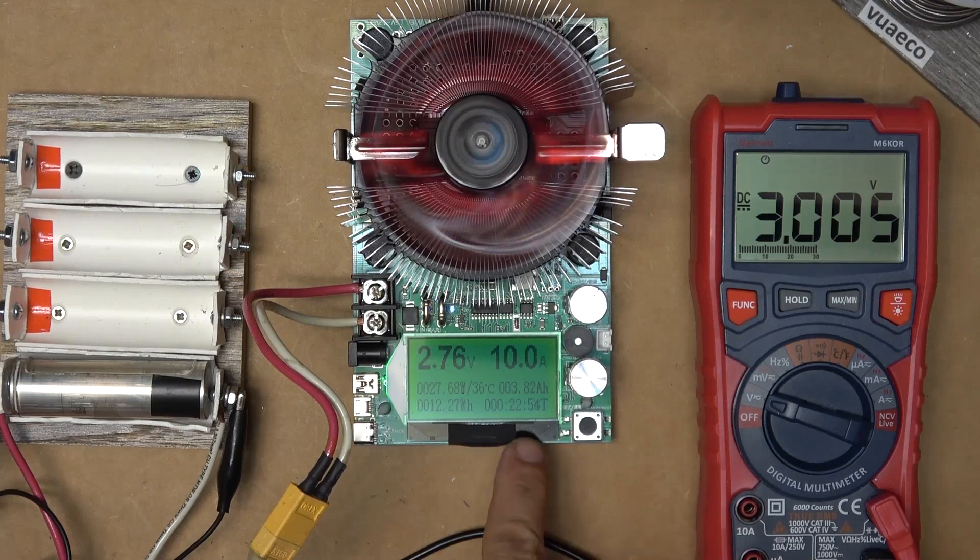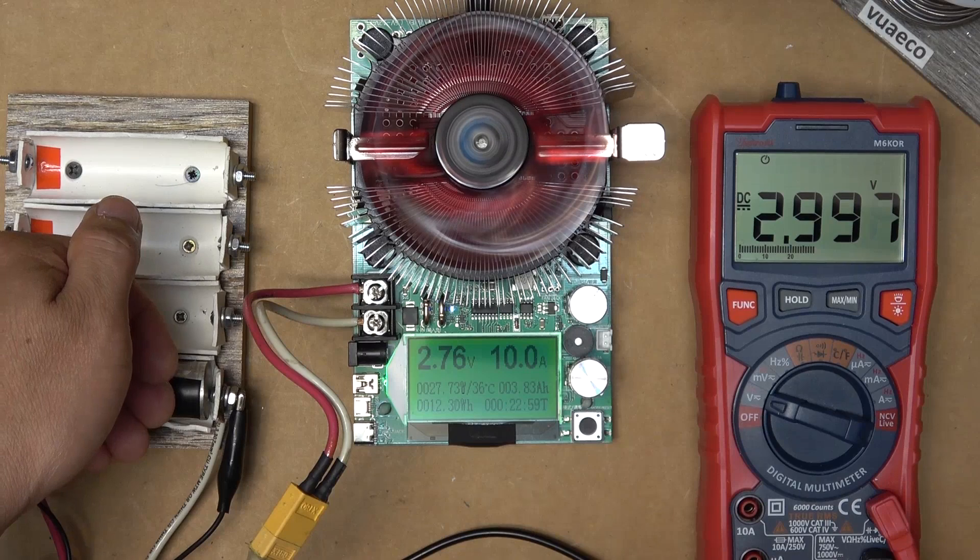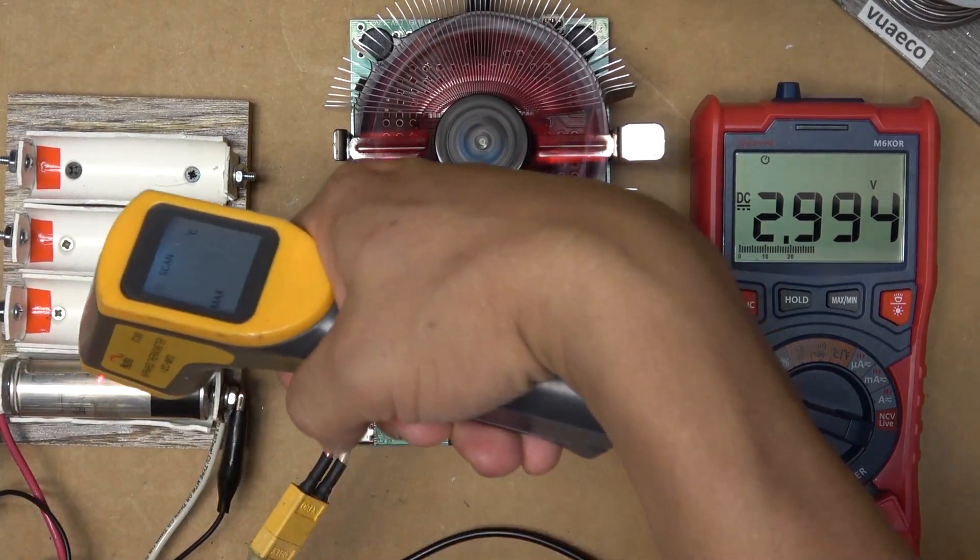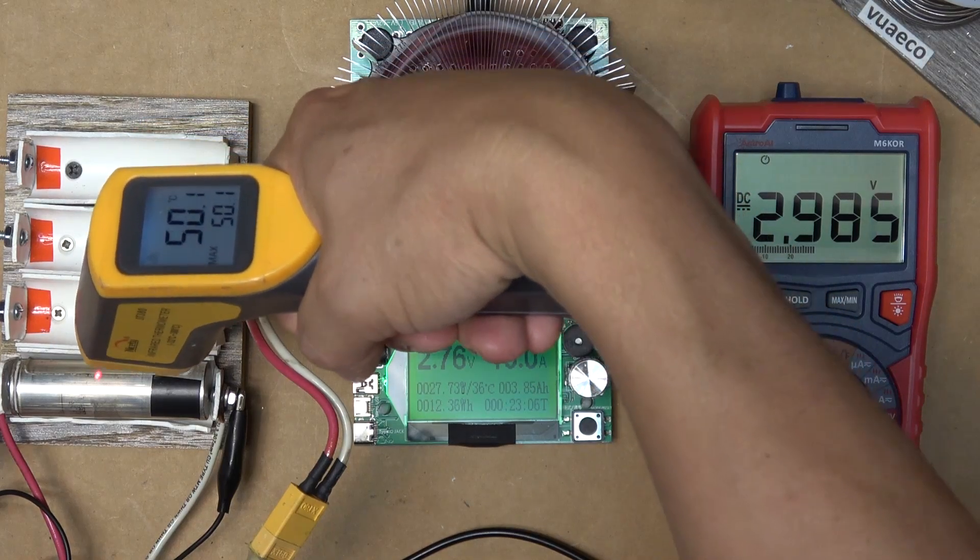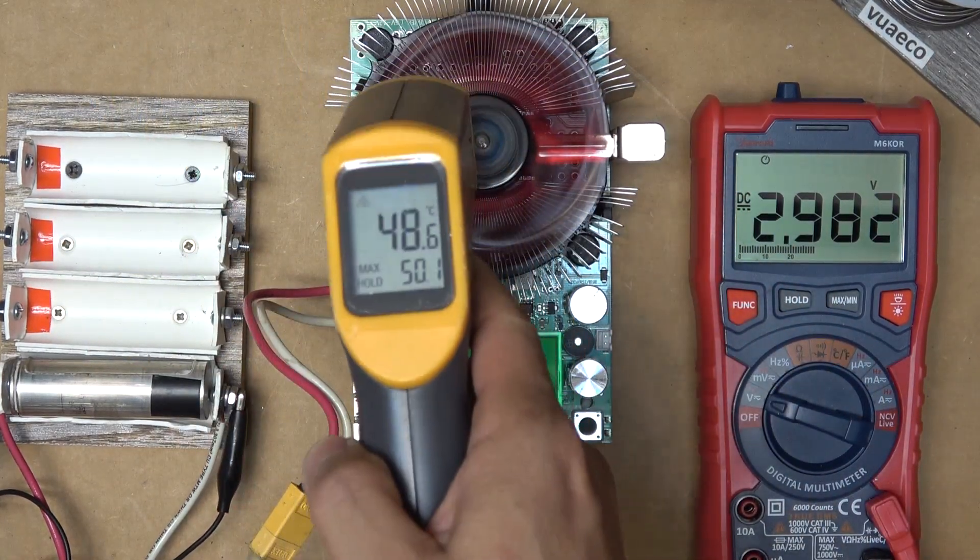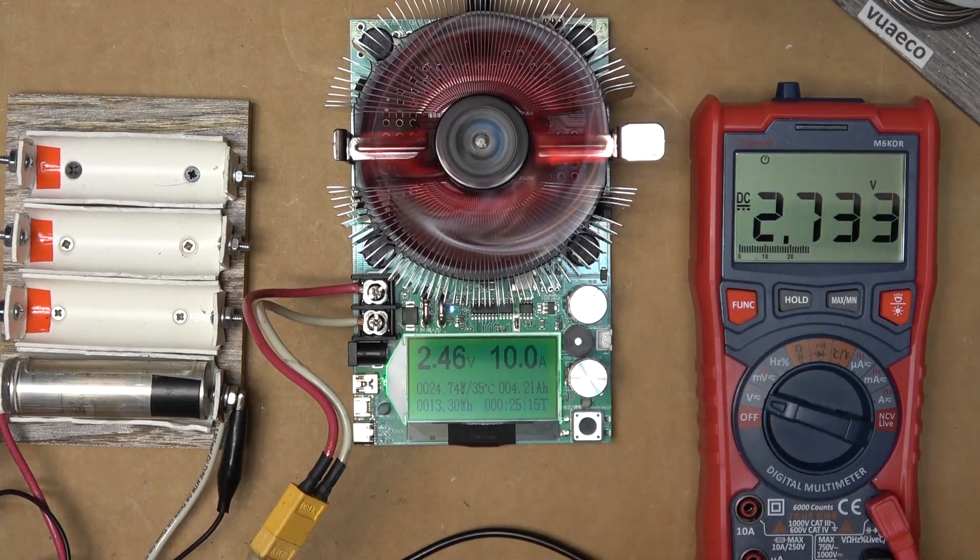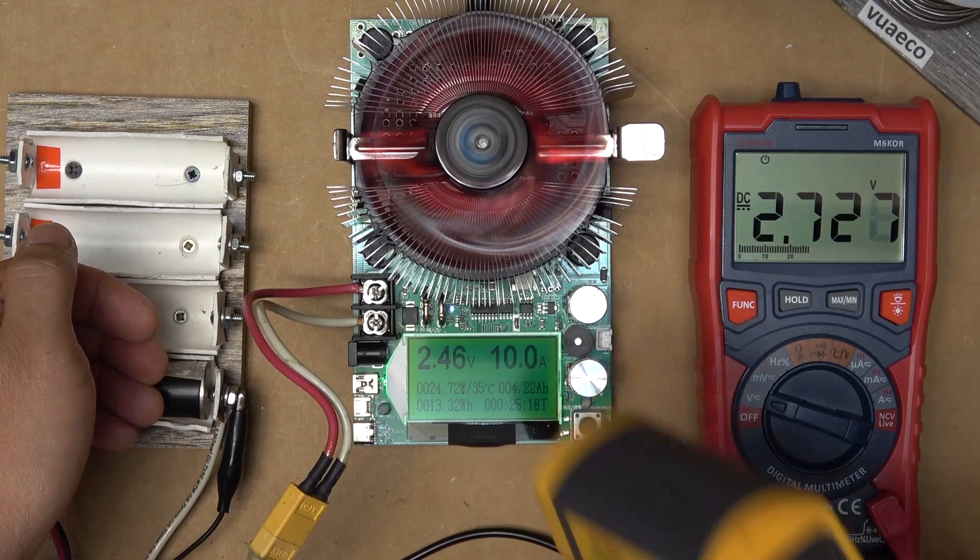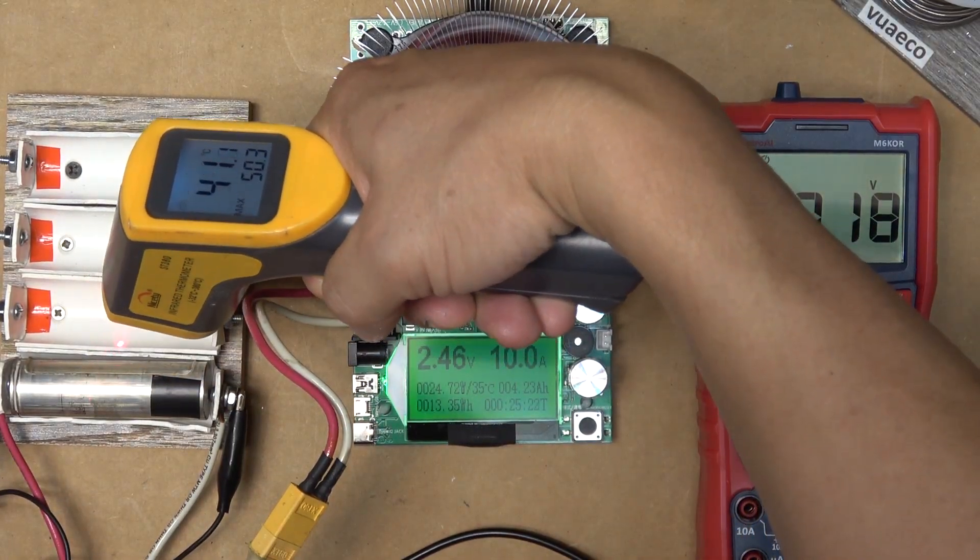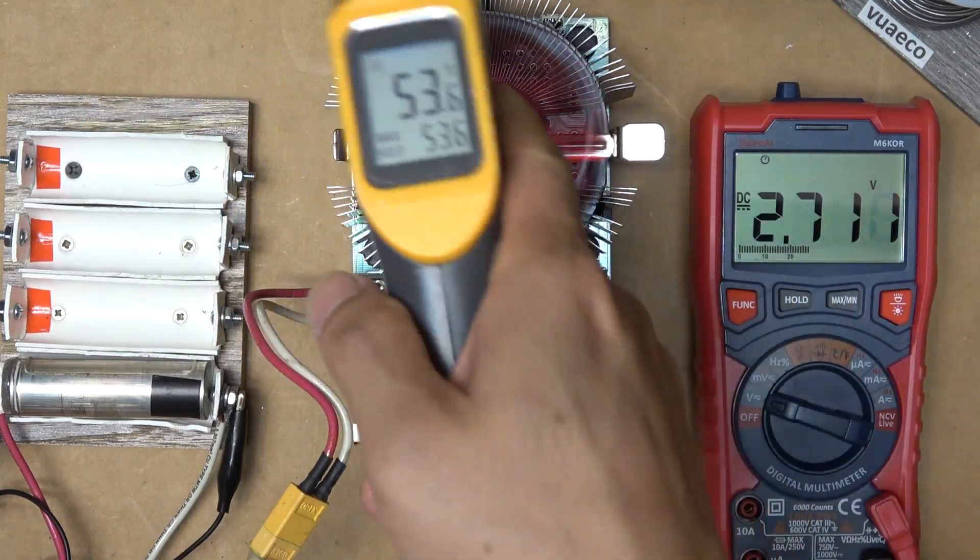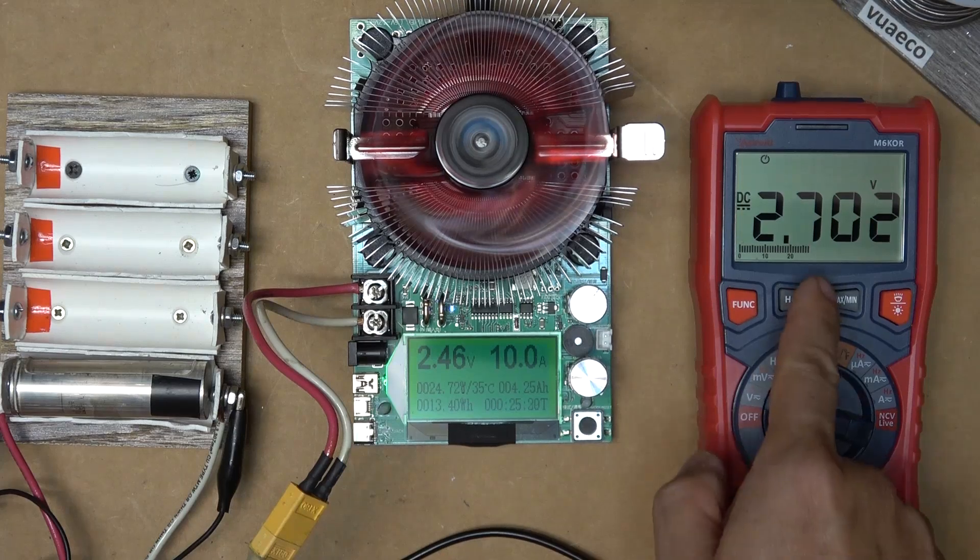Right now we have about 23 minutes mark and the battery is getting hot to the touch. I can't hold it for too long. It's about 50 degrees Celsius. Right now we're at about 25 minutes mark and battery is about 52 Celsius, 53 Celsius. And it's going down pretty fast now.